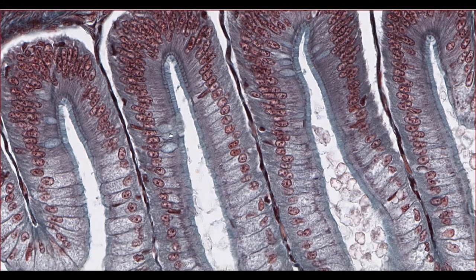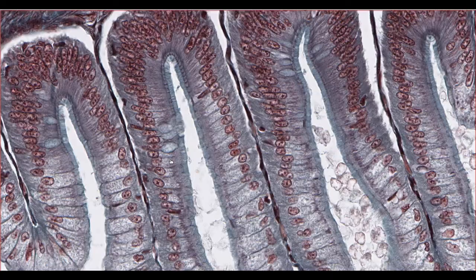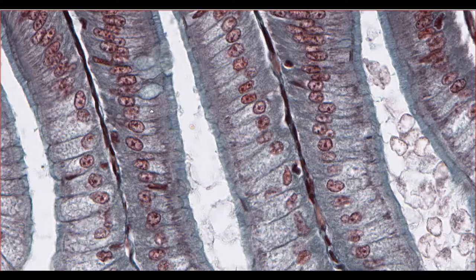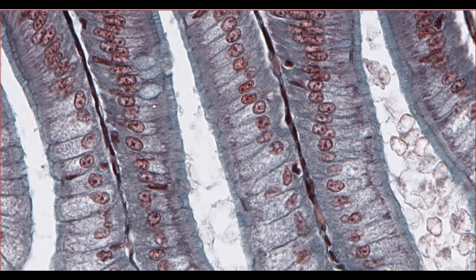Some of them will form these goblet cells here, which secrete mucus, and others will begin to form enterocytes, or the epithelial cells of the intestine.